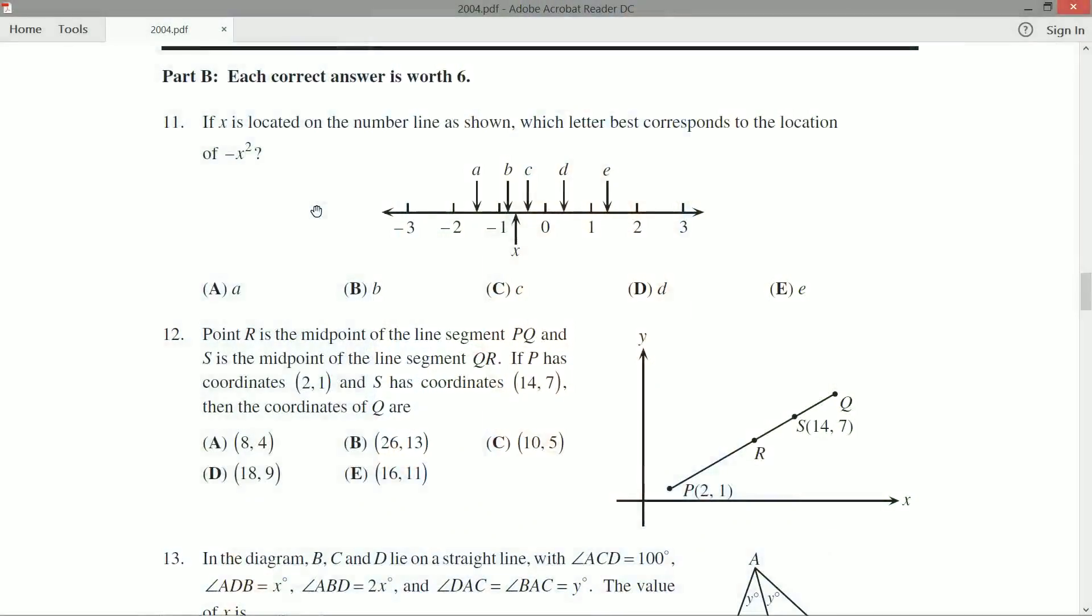So we sort of just have to take stock. Where is x? x looks like he's definitely negative because he's on the left side of zero. So he's between minus one and zero. So he's a negative number that is greater than negative one, but he's negative zero point something.